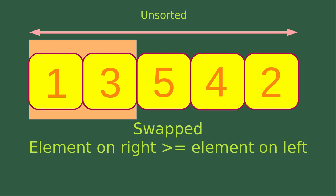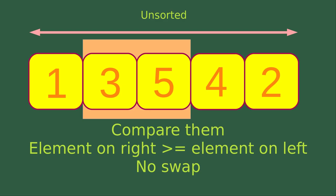The two numbers are swapped so that the element on the right-hand side is larger than or equal to the element on the left-hand side of the moving window. After the comparison, I would like to move my moving window to the other two adjacent elements. For this situation, the element on the right-hand side is larger than or equal to the element on the left-hand side, so no swap is needed.